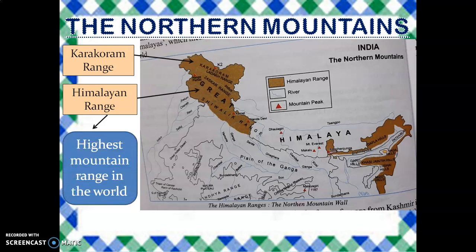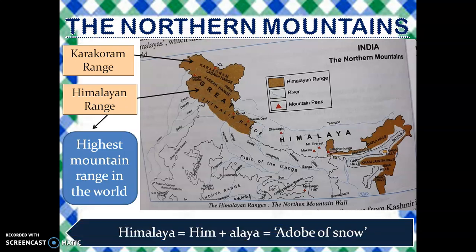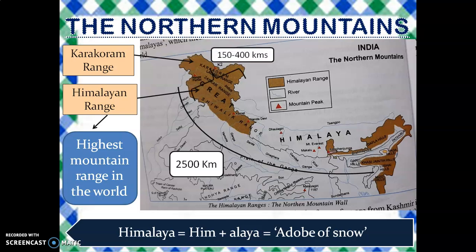The Himalayan range is the highest mountain range in the world. The word Himalaya is made up of two words: Him and Alaya, and it means abode of snow or house of snow. The mountain wall of the Himalayas stretches from Kashmir in the west to Arunachal Pradesh in the east. The stretch of the Himalayas is about 2,500 km in length and the width varies between 150 to 400 km. Nepal and Bhutan are two countries that lie completely within the width of the Himalayas.